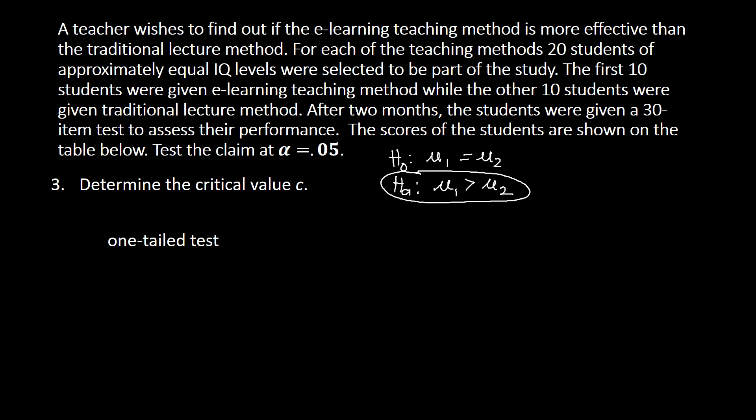Since the alternative uses the greater-than symbol, this is a one-tailed test. There are two types of one-tailed test: right-tailed and left-tailed. The greater-than symbol points to the right, so this is a right-tailed test. We also set our level of significance alpha equal to 0.05.